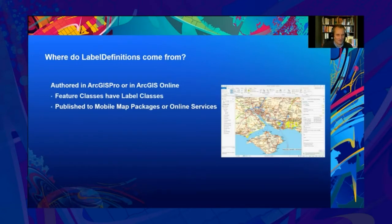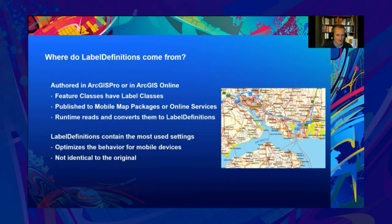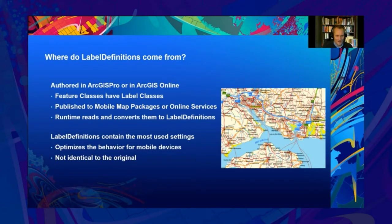But where do label definitions come from? If maps and layers have been authored in ArcGIS Pro or ArcGIS Online, then the feature classes may have been given one or more label classes each, and can be published to mobile map packages or online services. These can then be read by runtime applications, which internally convert them to label definitions. Label definitions prioritize the most used settings and optimize the appearance and behavior for mobile devices. The appearance and placement of labels will not be identical to the authoring environment. The streamlined runtime label placement engine simplifies the placement algorithms and doesn't support all the desktop preferences, allowing runtime labels to individually respond in real time to changes to the view or feature, and the labels stay still unless they need to change, reducing distraction on the display.